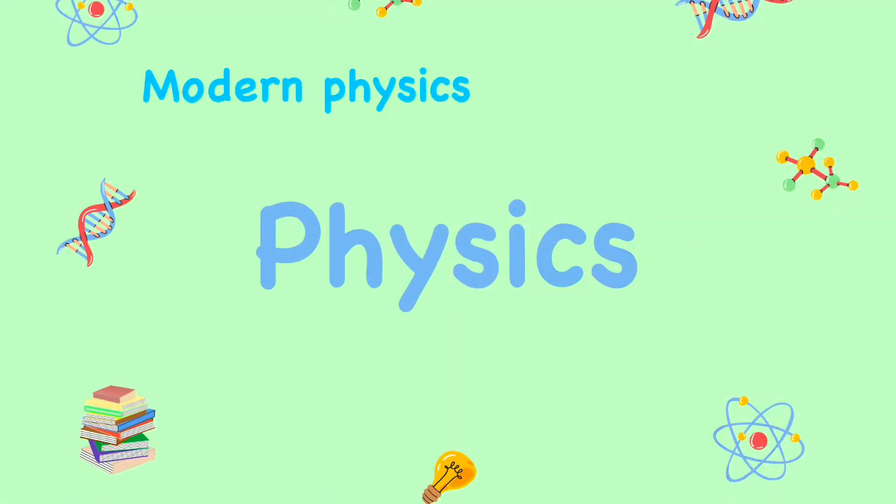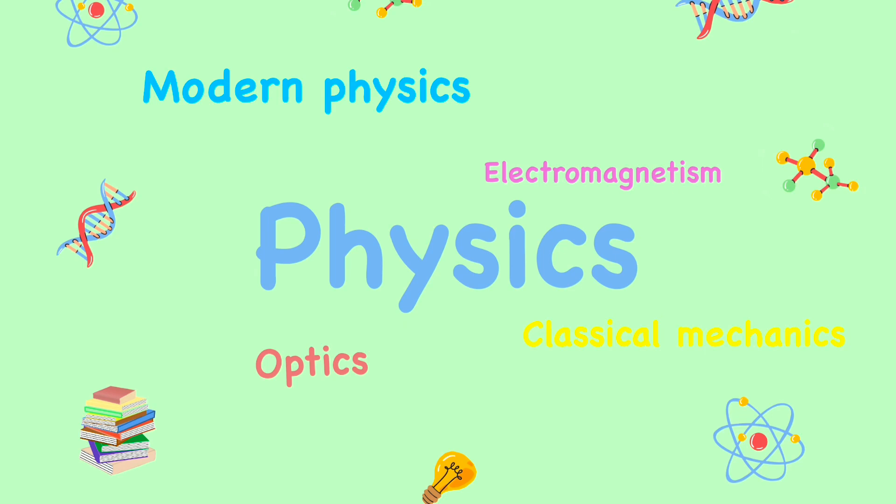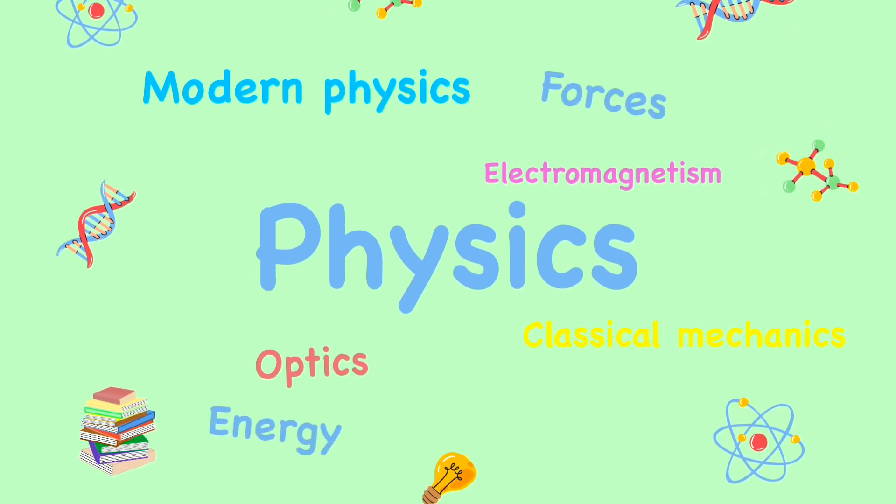Physics is a branch of science that helps us understand how objects, forces and energy all interact. Physics is divided into classical mechanics, electromagnetism, modern physics, optics, external dynamics and nuclear physics.